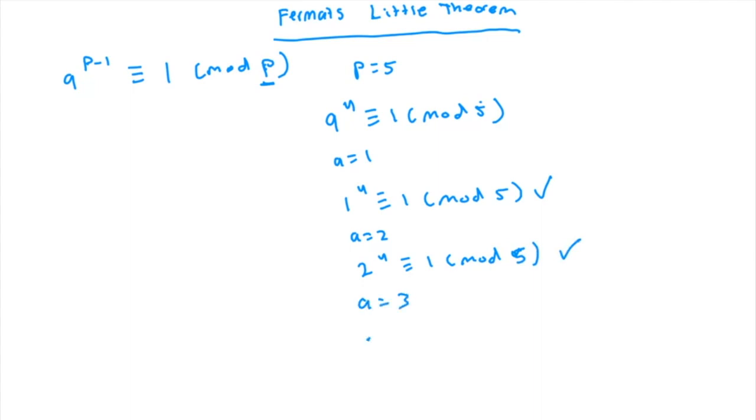If we set a equal to 3, we get 3 to the power of 4 is congruent to 1 mod 5. And 3 to the power of 4 is 81. And 81 is congruent to 1 mod 5. And if you keep on doing this, you'll see all of this works. So therefore, we have this equation is true.